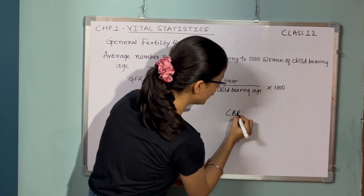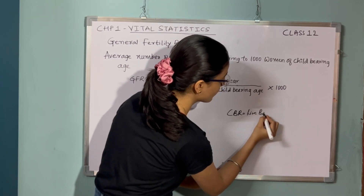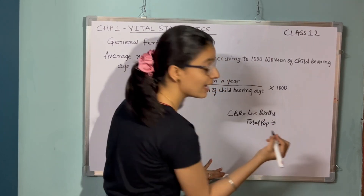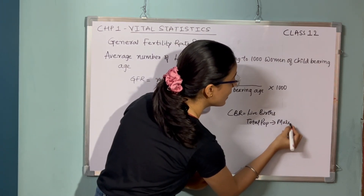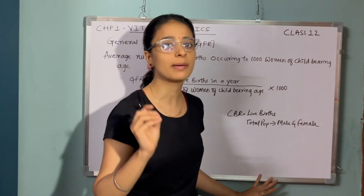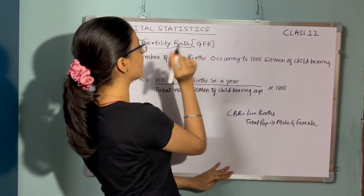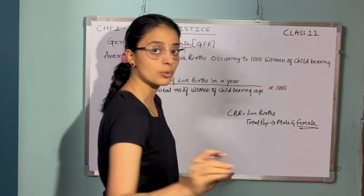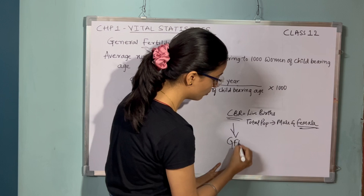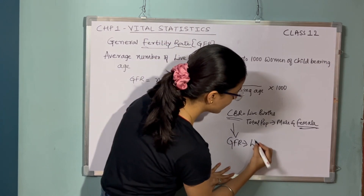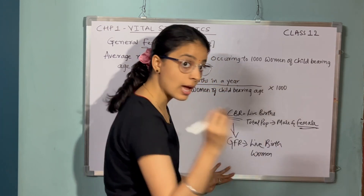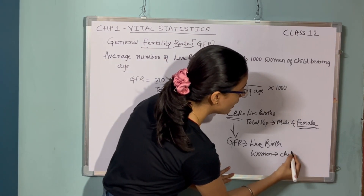When we studied about CBR, we studied about live births and total population — this population includes both male and female. But when we are speaking particularly related to fertility rate, we have to consider more specifically related to female or women. So to overcome this disadvantage, we will be studying about GFR, where we will be considering live births and particularly women.